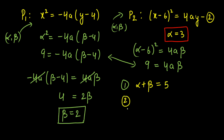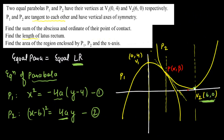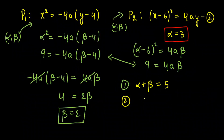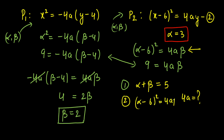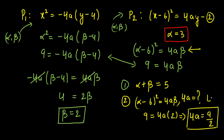Moving to the second part: finding the latus rectum of both parabolas. Since both are equal parabolas, the latus rectum is 4a for both. Substituting α = 3 and β = 2 into the second parabola equation (α - 6)² = 4aβ: we get 9 = 4a × 2, so 4a = 9/2. Therefore the length of the latus rectum is 9/2.